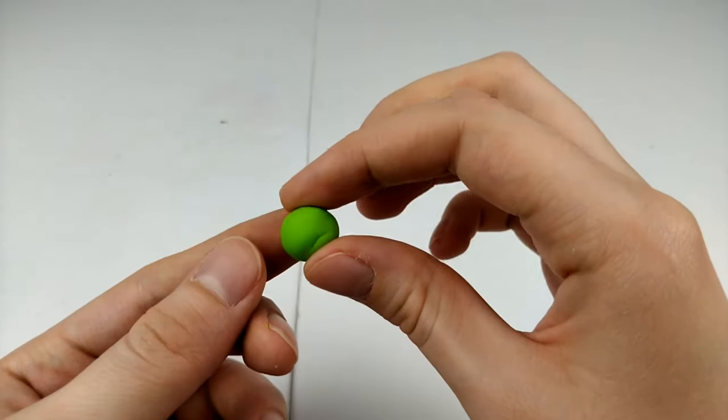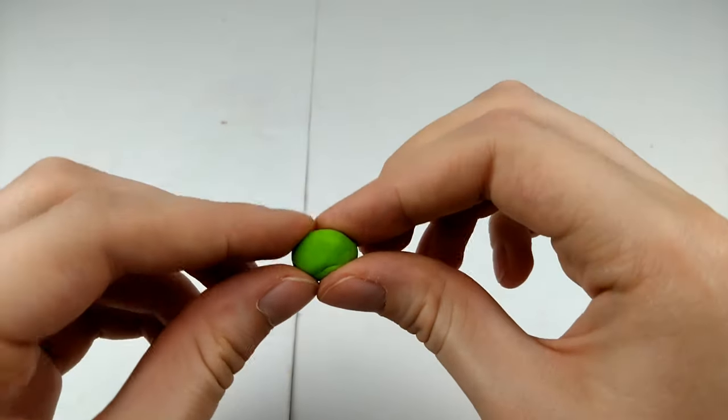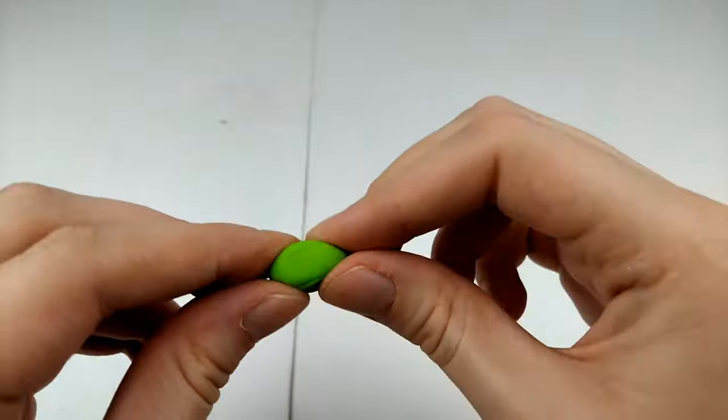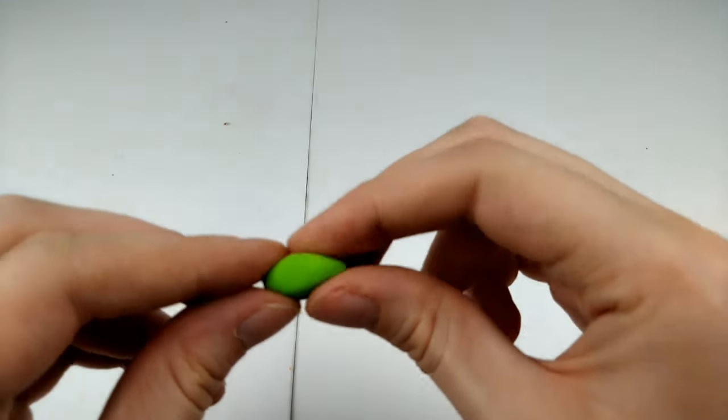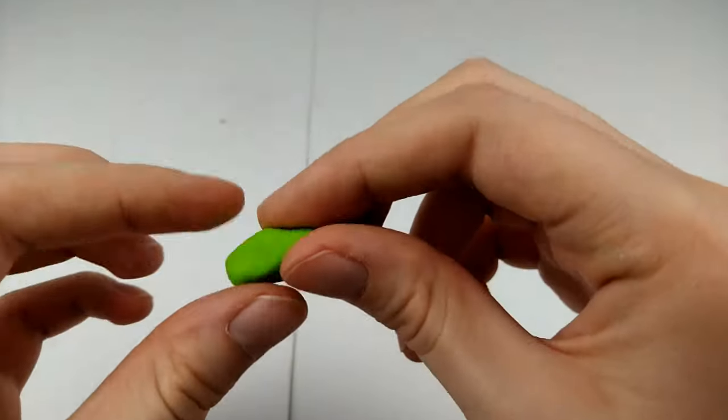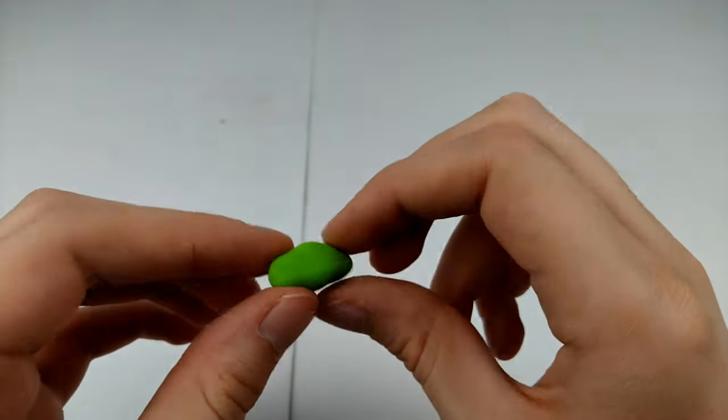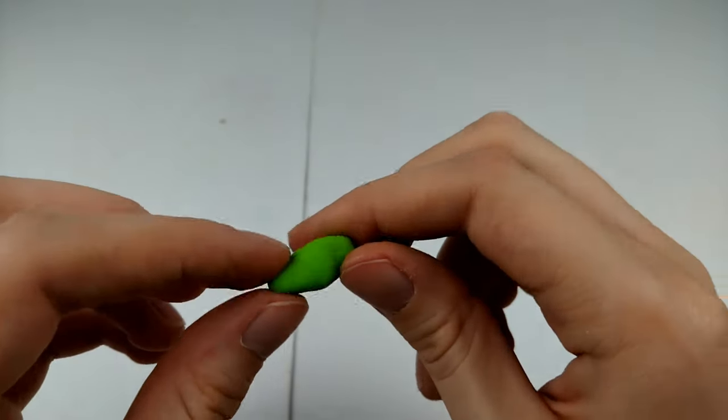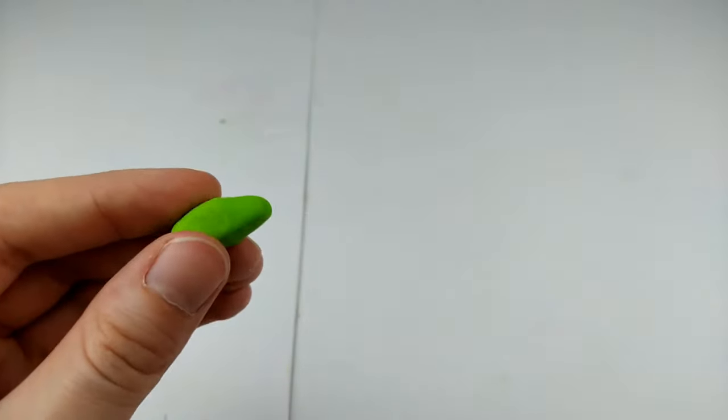And last but not least, our little green frog. Start with a ball of green clay and pinch the ends into a diamond shape. Make sure one end is longer than the other. And once you're happy with the shape, you can now move on to the face.